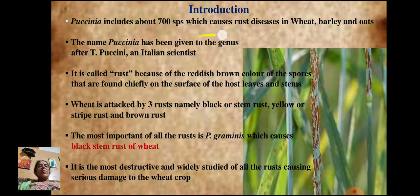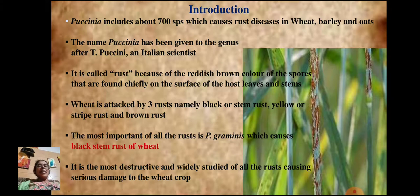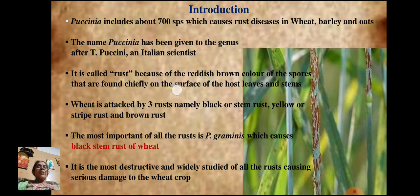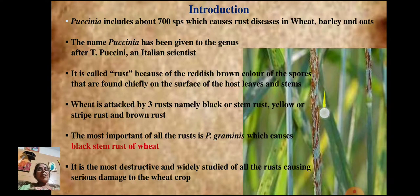Puccinia includes about 700 species which cause rust diseases in wheat, barley, and oats. The name Puccinia has been given to the genus after T. Puccini, an Italian scientist. It is called rust because of the reddish-brown color of the spores, which are commonly seen as brown reddish-brown spots on the stem and leaves of the plant.